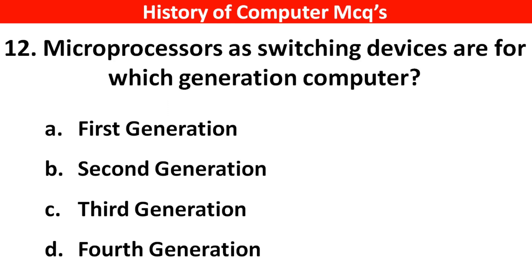Next question. Microprocessors as switching devices are for which generation of computers? Options A: 1st generation, B: 2nd generation, C: 3rd generation, D: 4th generation. Right answer is option D, 4th generation.